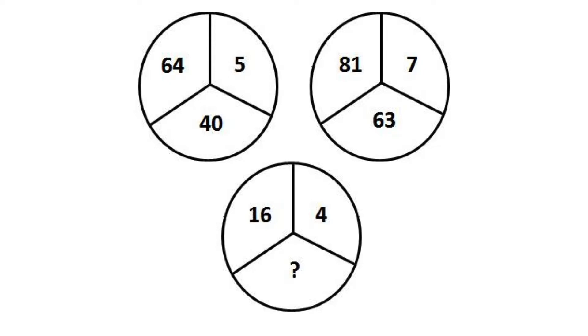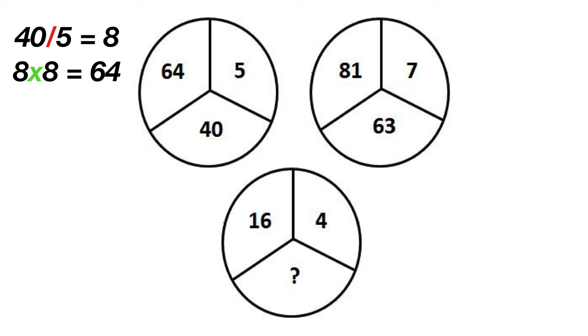There's a pattern that emerges with the relationships between the numbers. The left circle's numbers are related as follows. 40 divided by 5 is 8, and 8 squared is 64.